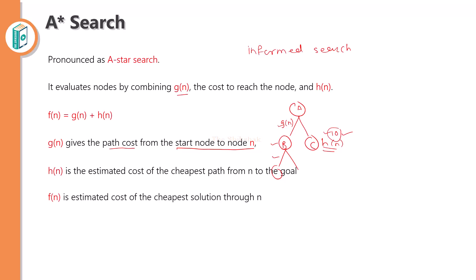What is F(N)? F(N) is nothing but the addition of G(N) plus H(N), which gives us the estimated cost of the cheapest solution through node N. We will calculate F(N) and this value will represent the cheapest solution to reach the goal. Overall, we will use this formula in this algorithm.